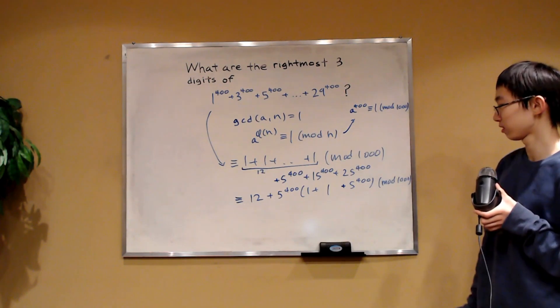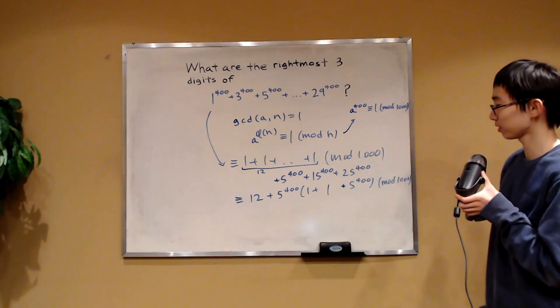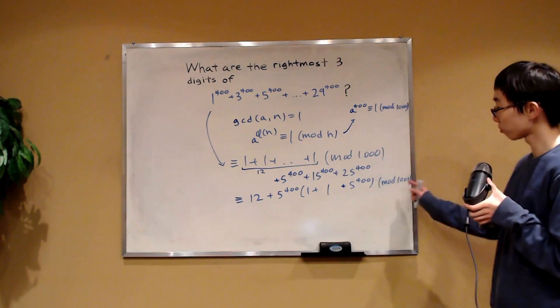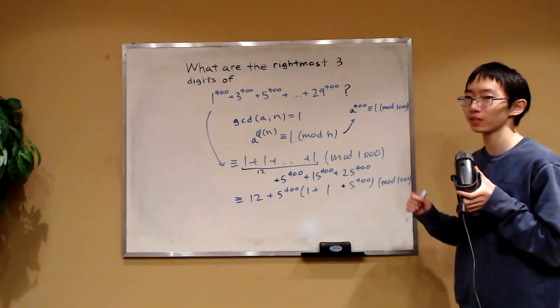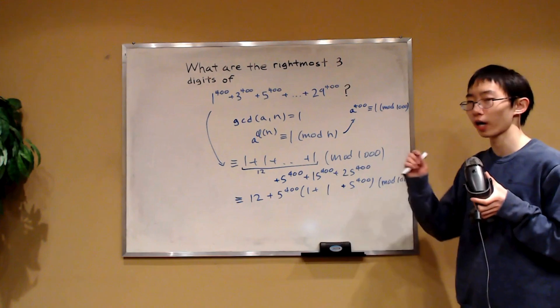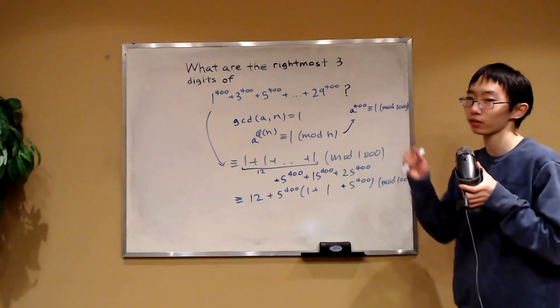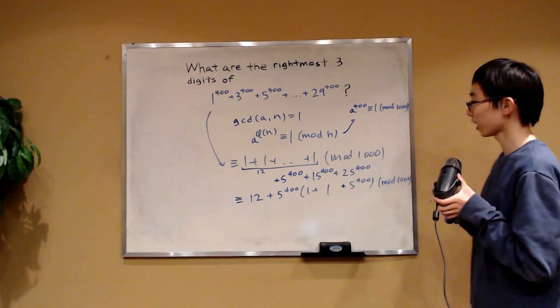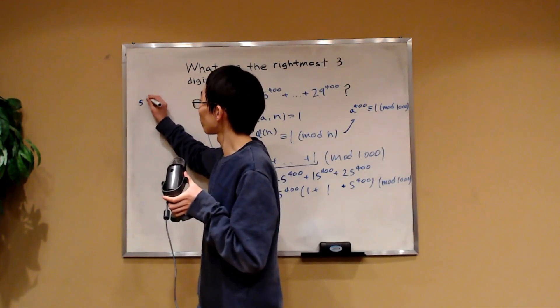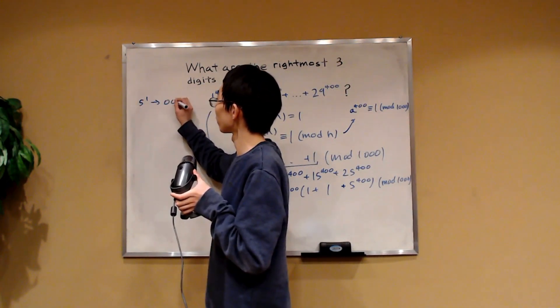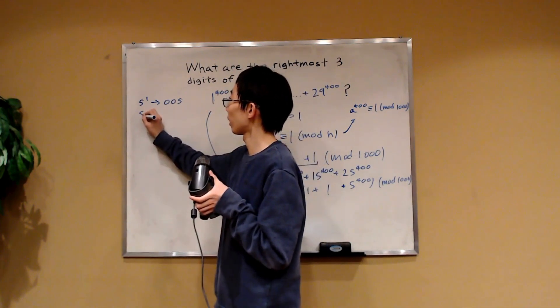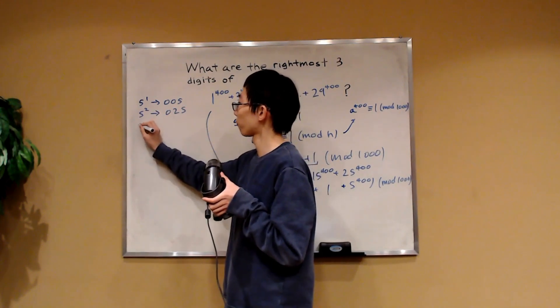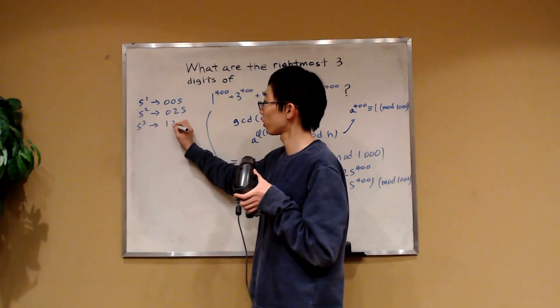It might not seem exactly obvious how we can perform modular arithmetics on this number but it's mod 1,000 so maybe we can just repeatedly raise 5 to higher powers and observe a pattern with the last 3 digits. Indeed, if you were to actually do that then consider this: 5 to the 1 ends in 005, if you take 5 squared this ends in 025, if you take 5 cubed it ends in 125, if you were to take 5 to the 4 it ends in 625.